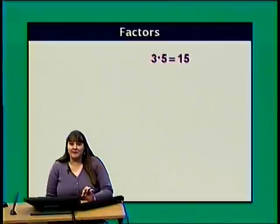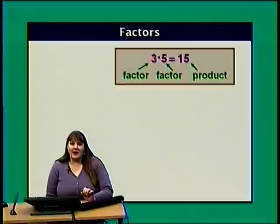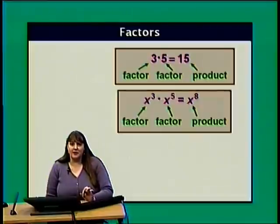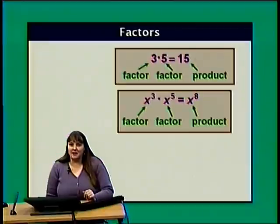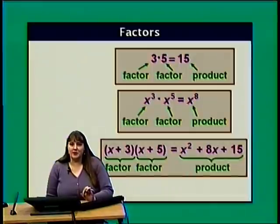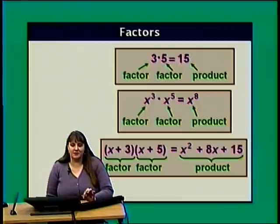In the equation 3 times 5 equals 15, the 3 and 5 are factors of the product 15. In the equation x cubed times x to the fifth equals x to the eighth, x cubed and x to the fifth are factors of x to the eighth. We can also think of x to the eighth as a product of eight factors of x. In the equation x plus 3 times x plus 5 equals x squared plus 8x plus 15, the binomials x plus 3 and x plus 5 are factors of the trinomial x squared plus 8x plus 15.